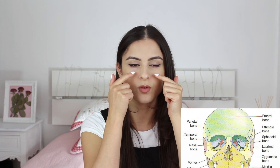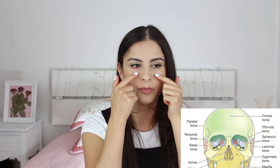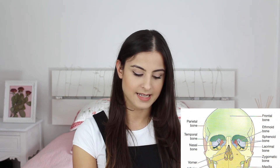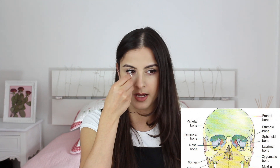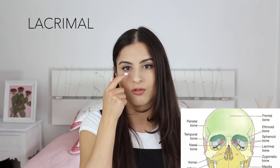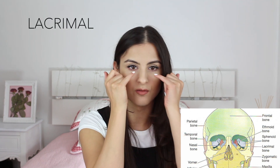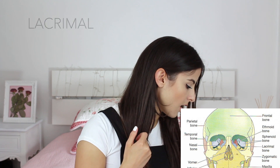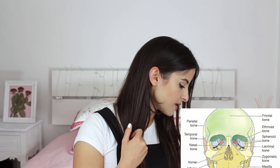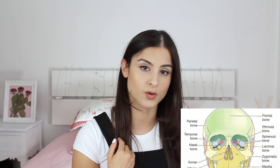Then I like to remember ethmoid — it's one bone in between the eye sockets and behind your nose; it forms parts of the nasal cavity. Right next to ethmoid, in between the eyes, is lacrimal, which forms the inner wall of the eye sockets.